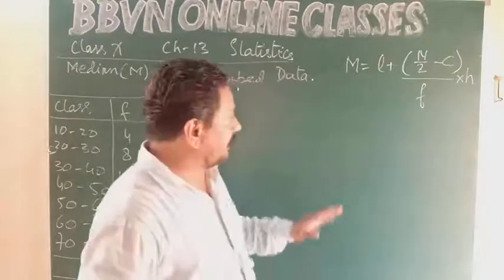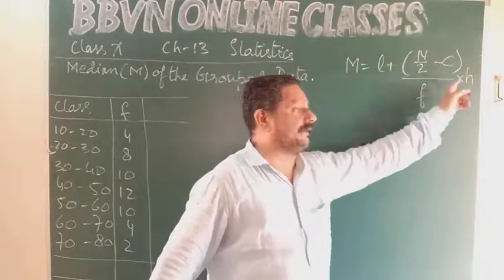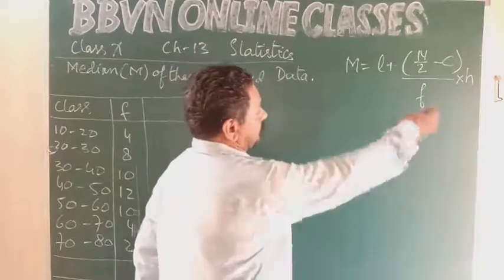Median is represented by capital M. The formula is L plus N upon 2 minus C upon F into H. Let us see what all these things are.